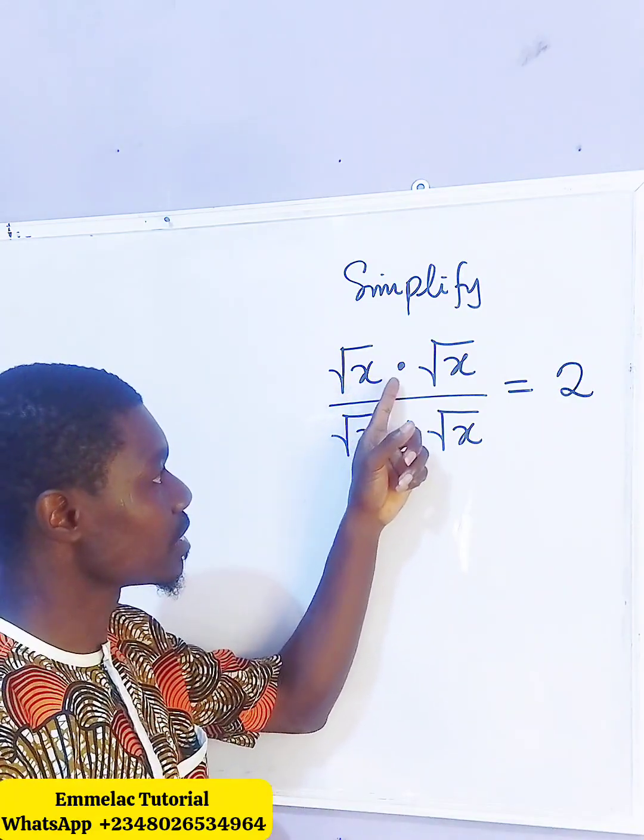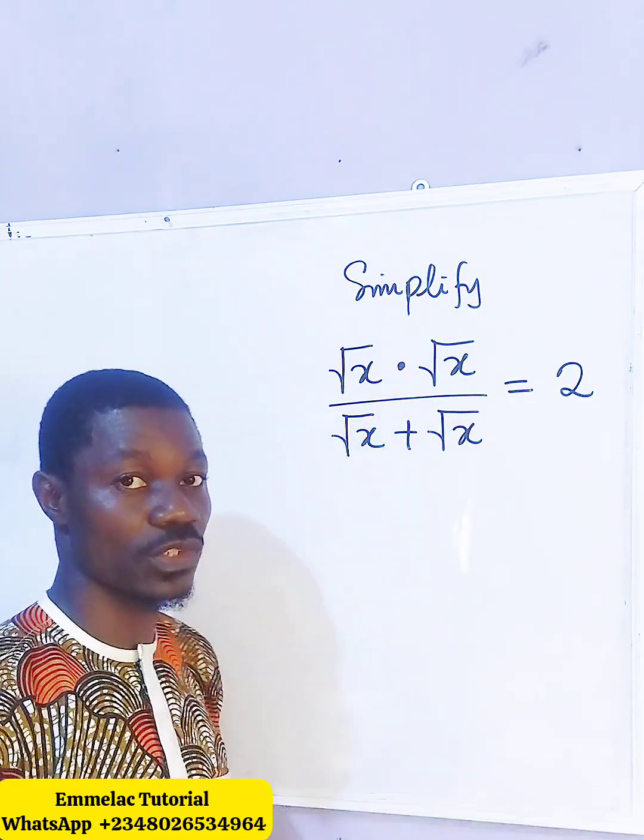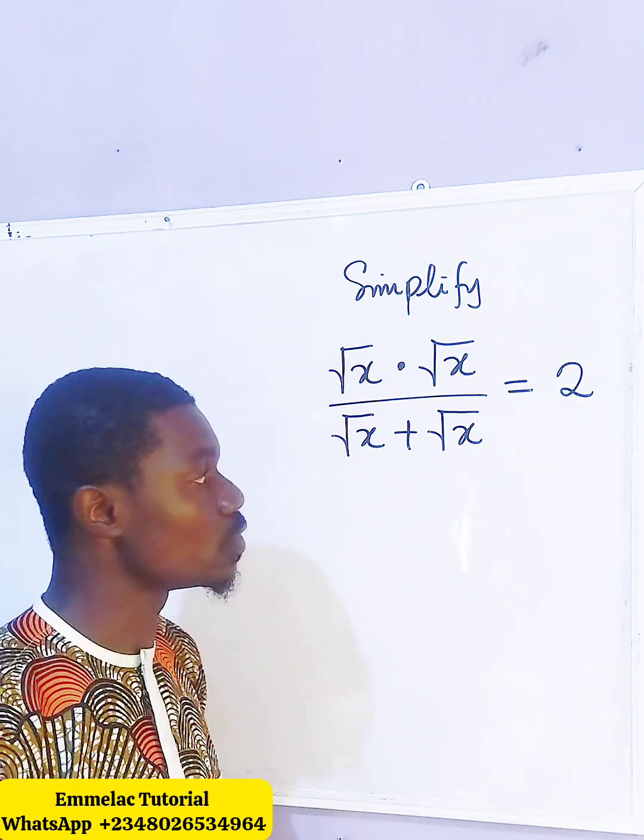Here we have the square root of x times the square root of x all over the square root of x plus the square root of x all equals to 2.